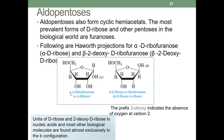If the OH on carbon 1 is up, you call it beta-D-ribopyranose. When carbon 2 is replaced with hydrogen, it's deoxyribose. Since the OH on carbon 1 is up with respect to carbon 2, you call it beta. The short name is beta-2-deoxyribose — meaning at carbon 2 you have deoxy, without the hydroxide. So this is beta-2-deoxy-D-ribose since the OH is up.